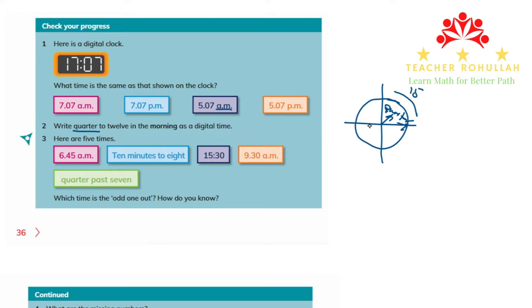Or if the time is 4:45, it is quarter to five — because it means 15 minutes are left to be five o'clock. Now, because it says quarter to 12 in the morning, we can show it in two different ways on a digital clock.